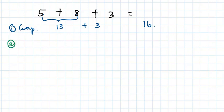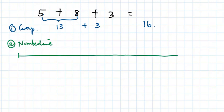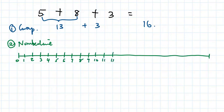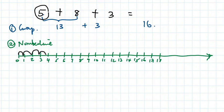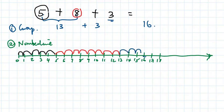The second option is to use a number line. Draw a line from zero through eighteen. Jump five steps — one through five — then eight more steps — one through eight — then three more steps — one, two, three. Your final answer becomes 16.